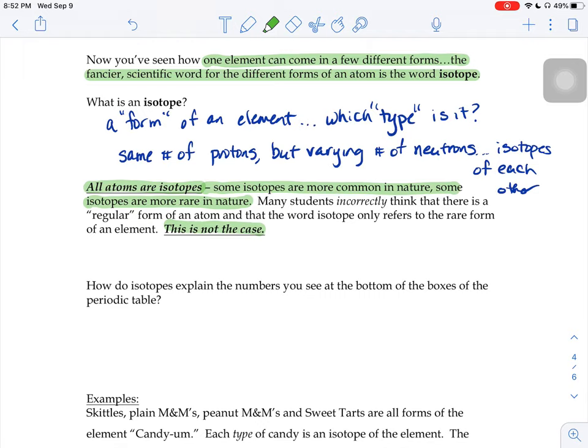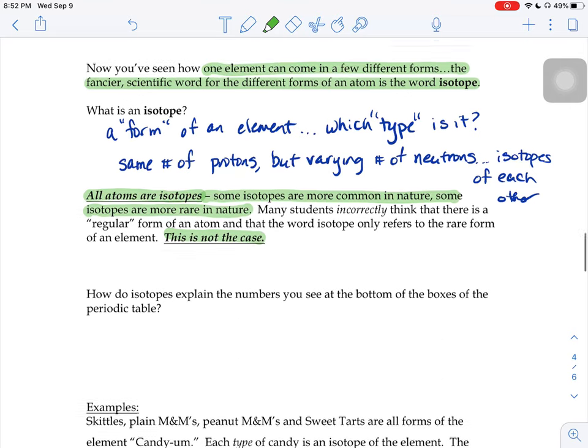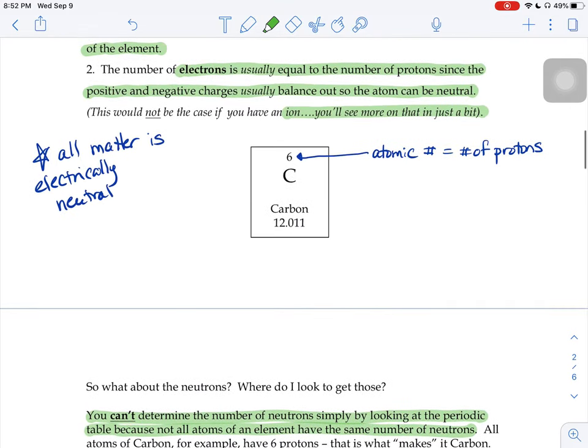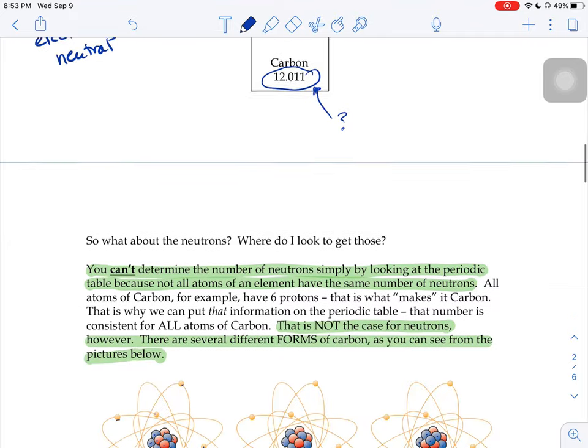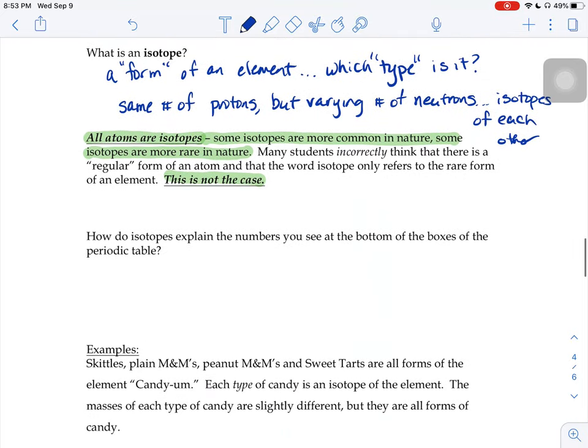So, how does the fact that isotopes exist help explain the numbers you see at the bottom of the boxes on the periodic table? If I scroll back here, when we look at our sample periodic table square, what's the deal with this number? What's going on here? And what do isotopes have to do with that bottom number? Well, that bottom number, what that number represents, it's a weighted average atomic mass.